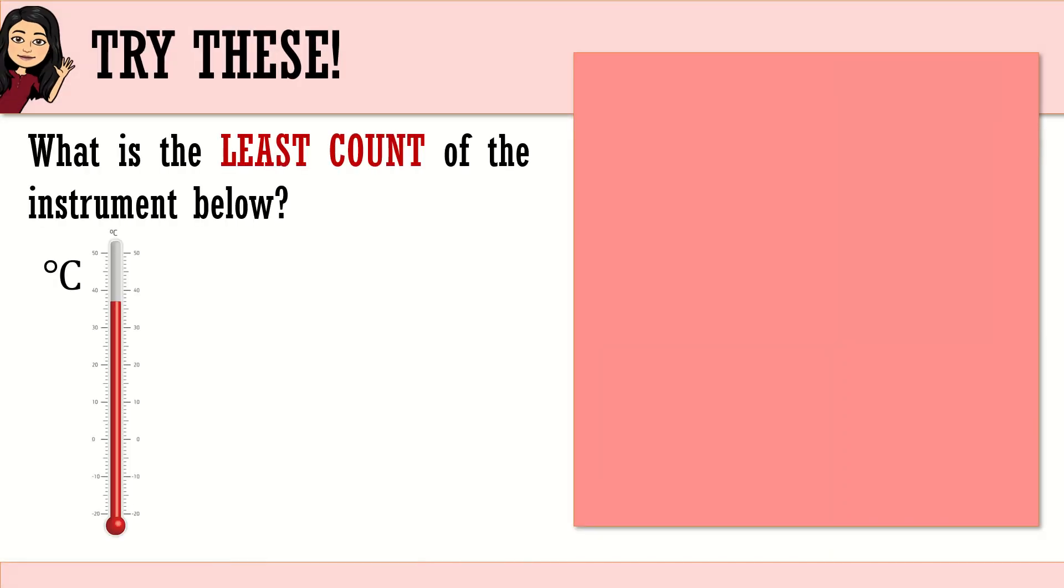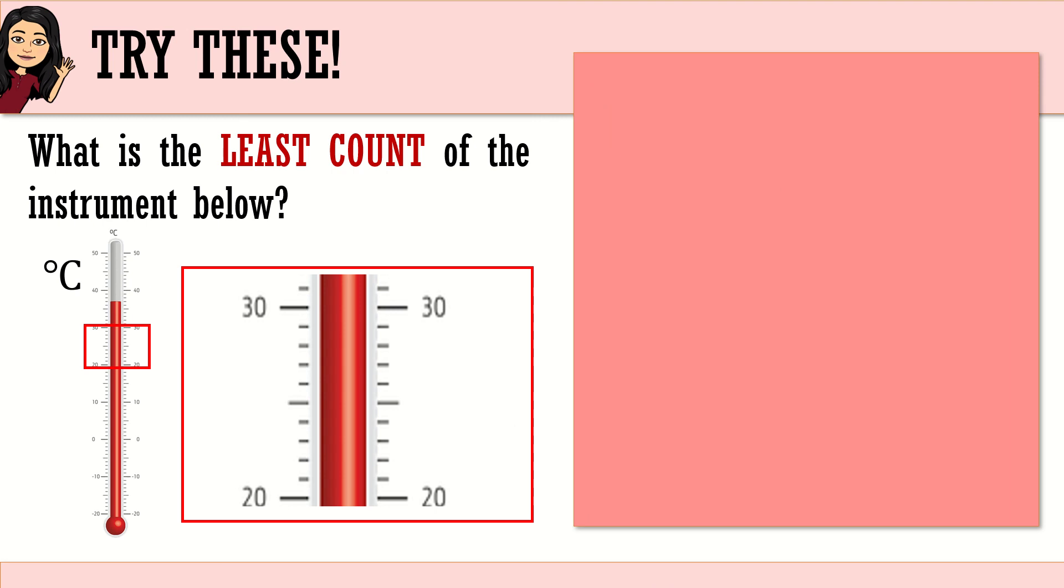Let's proceed to the second item. What is the least count of the instrument below? This time, it's a thermometer. You have there the magnified version of that part of your thermometer. Your timer starts now. Identify the two markings. Done. This time, count the number of divisions. Count carefully. Are you done? Use those values and compute for the least count. Wow. That's less than a minute. Let's reveal the answer. Let's check if we have the same answer.